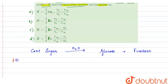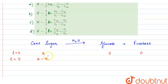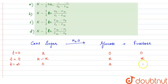Suppose at t = 0 initially there are 'a' moles of cane sugar, and at t = 0 there is no formation of glucose and fructose, so their concentration is 0. At time t = t, suppose x amount of cane sugar has reacted, so the remaining cane sugar is (a minus x), and the glucose and fructose formed are each x moles. At t = infinity, when all the reaction is completed, the cane sugar remaining is 0, and glucose and fructose formed are each 'a' moles.